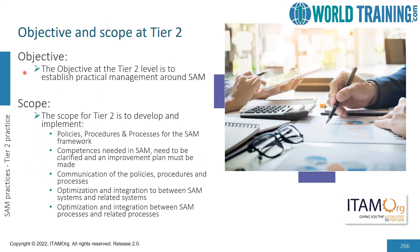The objective at tier two is to establish practical management around SAM — meaning move on to better management. The policies, procedures and processes for the SAM framework were already developed in tier one, but they will continue in tier two. The competencies also need to be understood, clarified and improved in tier two. Communicating the policies, procedures and processes, which came from tier one, will also remain in tier two. But what we have particularly in tier two is to optimize and integrate between the SAM system and the other systems related to SAM, and similarly optimize and integrate between the SAM processes and related processes.